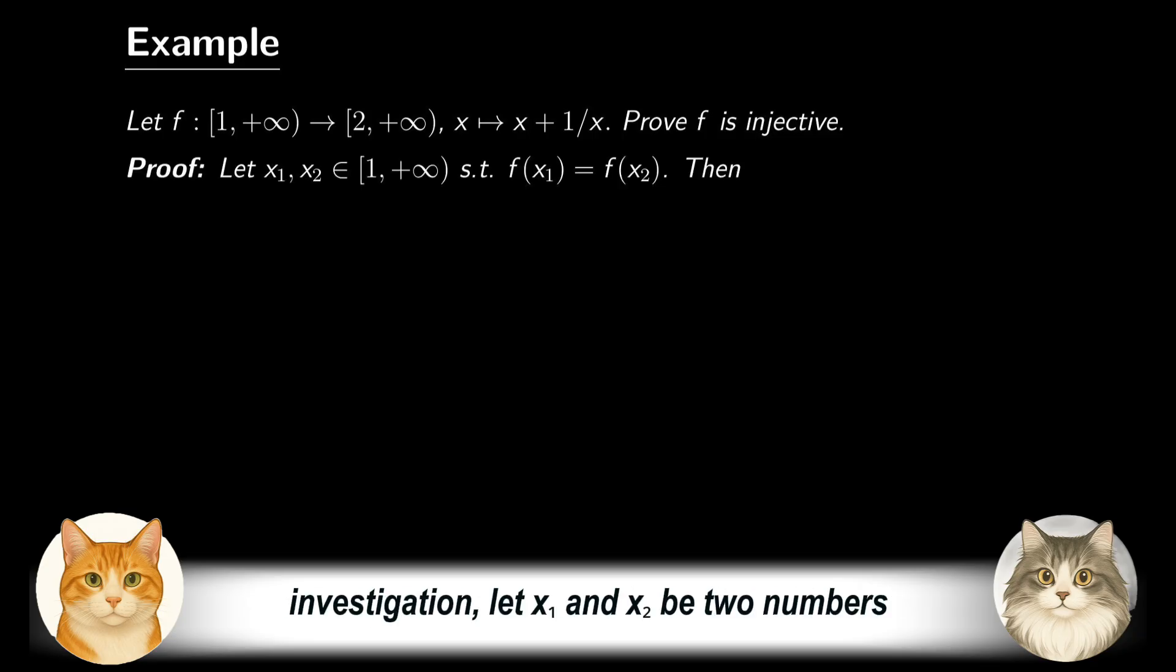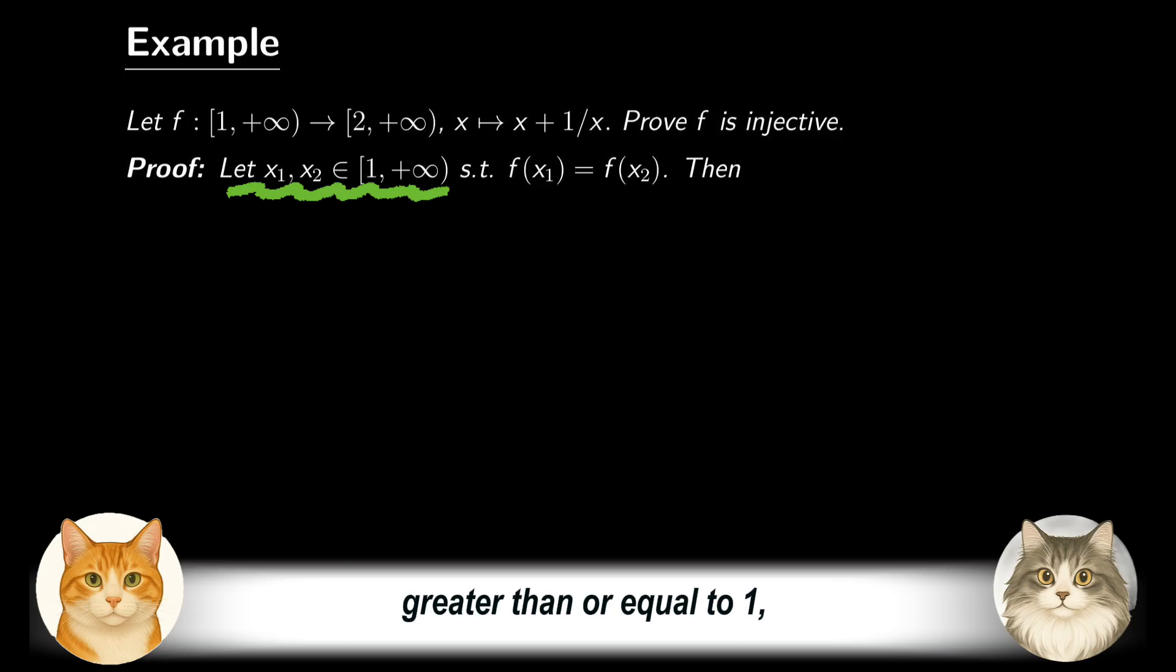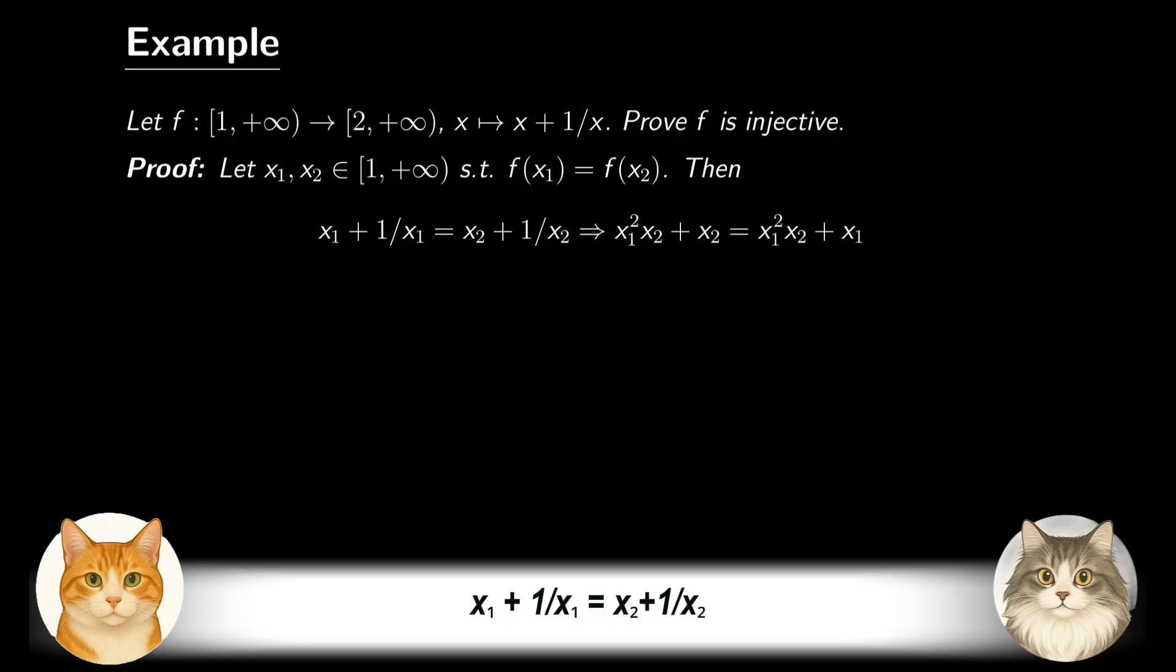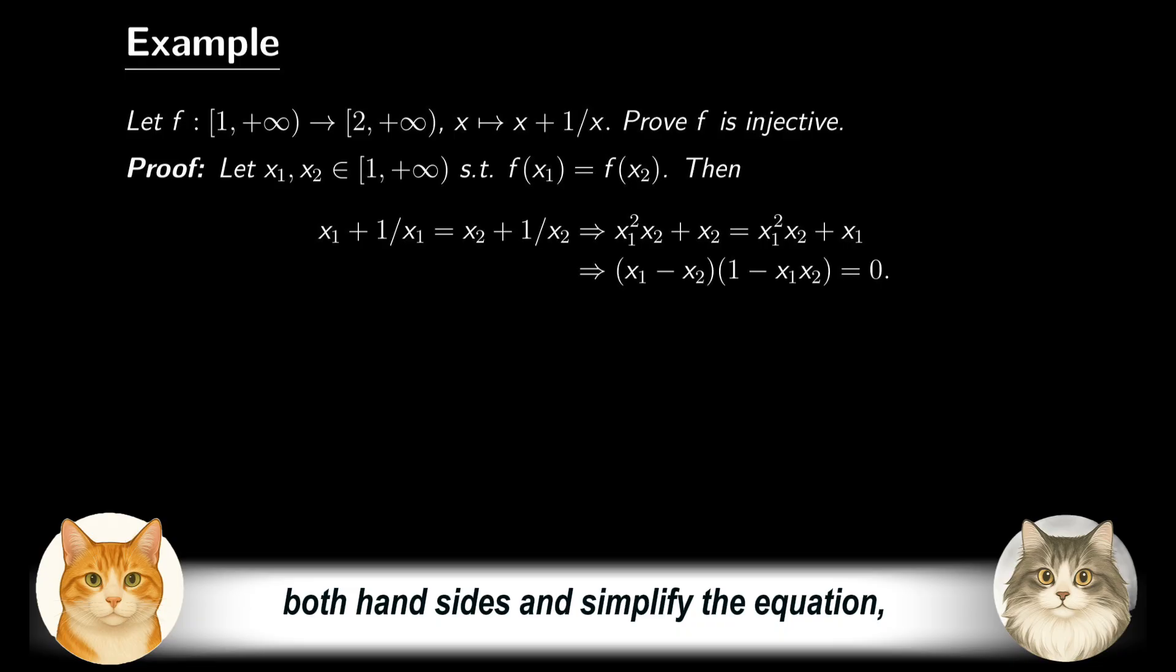To apply the above frame to the function under investigation, let x₁, x₂ be two numbers greater than or equal to 1, such that f(x₁) equals f(x₂). By the definition of the function, we see that x₁ + 1/x₁ is equal to x₂ + 1/x₂. Since x₁ and x₂ are non-zero, multiply x₁, x₂ on both hand sides, and simplify the equation, we come up with (x₁ - x₂)(1 - x₁x₂) equals 0.